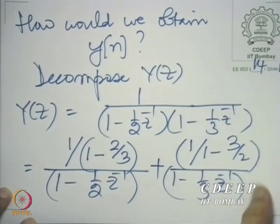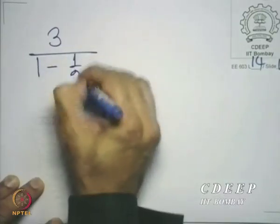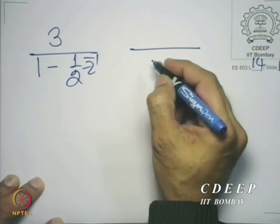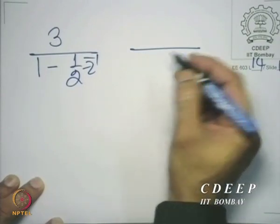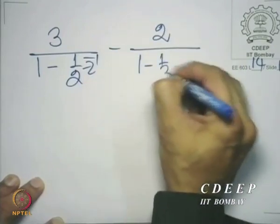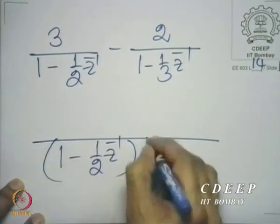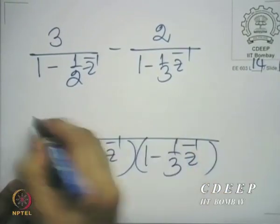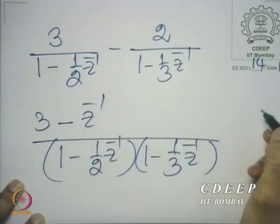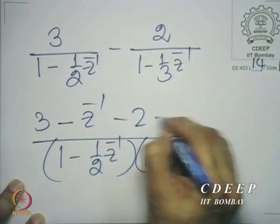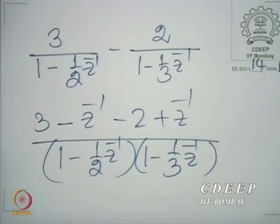Now let us verify. What we are saying is 1 by (1 minus two-thirds), that is 1 by one-third. So 3 by (1 minus half z-inverse) and (1 minus 3 by 2), that is minus half. So minus 2 by (1 minus one-third z-inverse). This is very easy to combine: 3 minus z-inverse, minus 2 plus z-inverse, and that indeed gives you back exactly the Y(z) that we had.